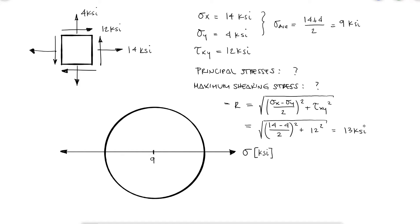With the value for the radius, we know that the maximum stress will be 9 plus 13, and the lowest stress will be 9 minus 13. Knowing where the zero would be, we can now draw the y-axis, or the axis for the shearing stress.